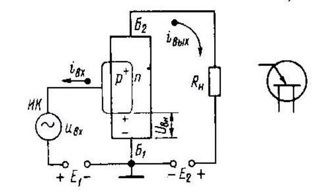The N-base area between outputs B1 and B2 is not a channel changing its resistance at the expense of change of the area of cross-section. The emitter P-plus forms a P-plus N-junction to which, unlike the field-effect transistor, not the reverse but the direct external voltage is supplied. The output current proceeding through the base creates inside it, on the area from the emitter to the output B1, a voltage drop of Ux, which is the reverse from the emitter junction and locks it.